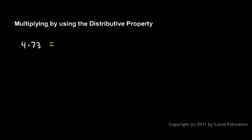In this case, I can say that 4 times 73 is equal to 4 times 70 plus 3. I split up my 73 into 70 plus 3, and the key here is understanding the distributive property. The 4 here gets distributed. It gets multiplied by the 70 and by the 3.